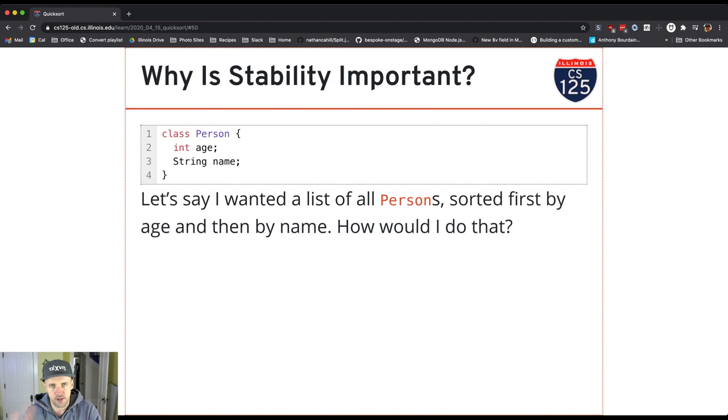Where if I swap two integers with the same value, I can't tell. But if I swap two people with the same age, but different names, I can tell.